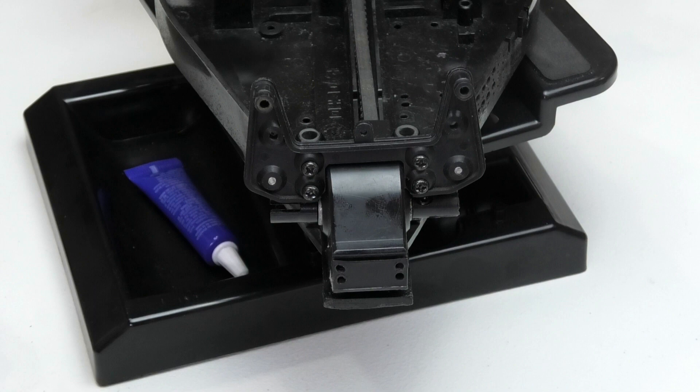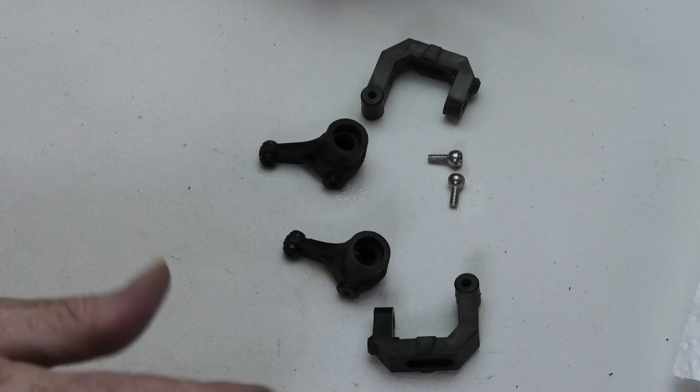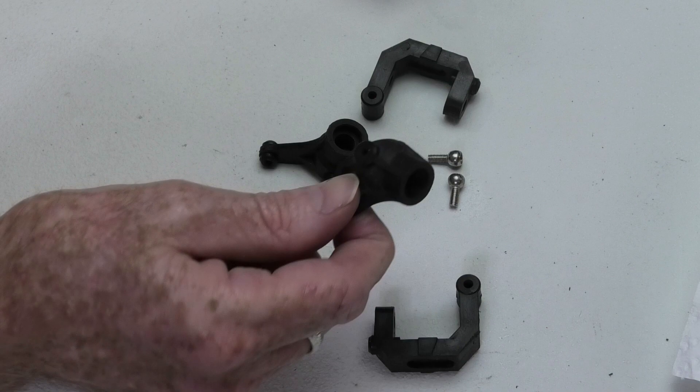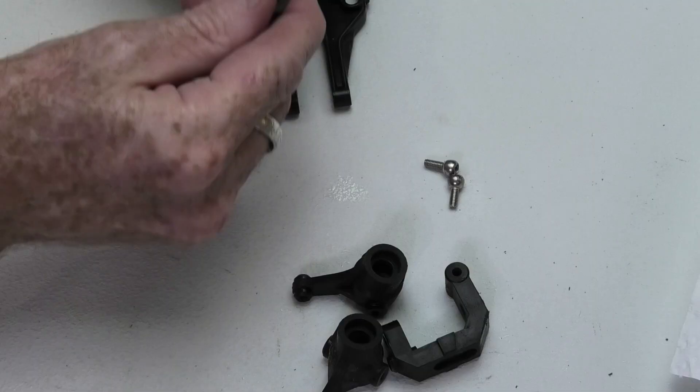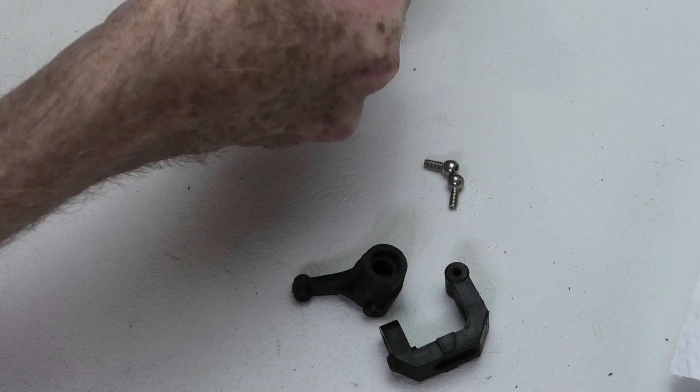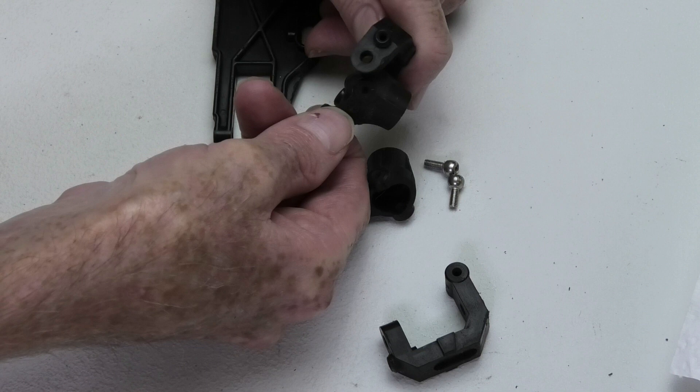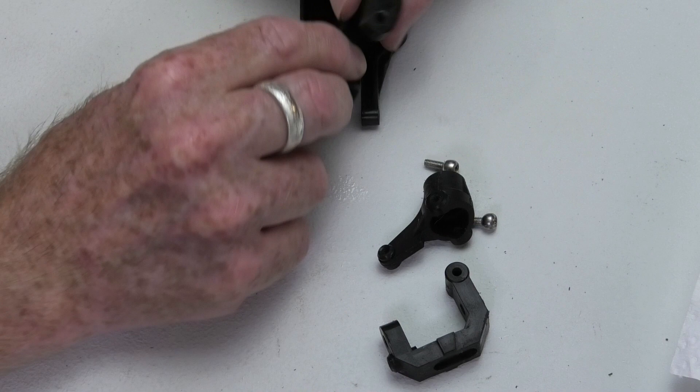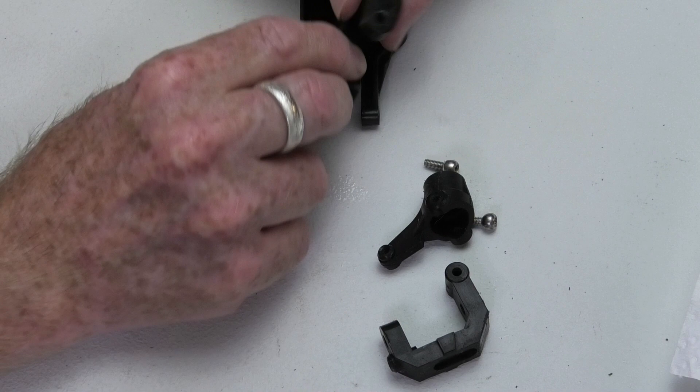Alright guys the front is a little bit more complicated because we have to deal with the front kingpins so we have the kingpins go into the c cups like that and then we put the c cups onto the swing arms. Being a little bit naughty but we put the c cups under the swing arms like that.